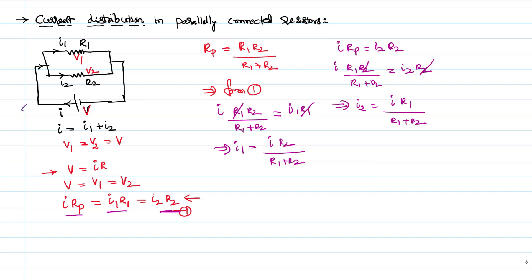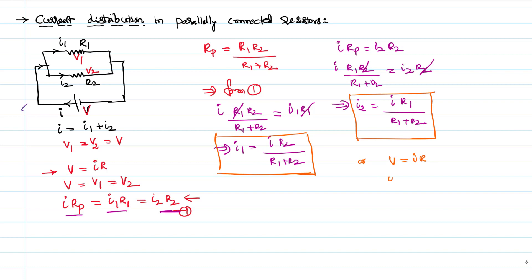That's how we can calculate how much current each resistor carries when connected in parallel. In simple terms, since V equals IR, we have I equal to V/R, and V is constant in parallel. So I is inversely proportional to R — less resistance means more current will flow, and vice versa. That's how current is shared when resistors are connected in parallel.